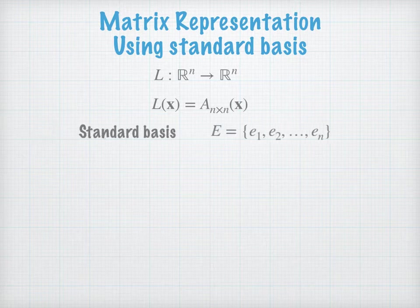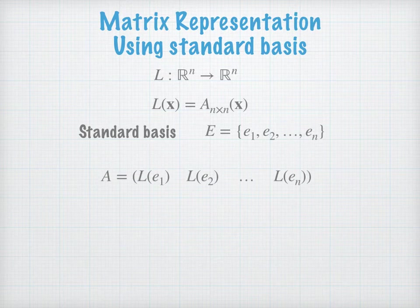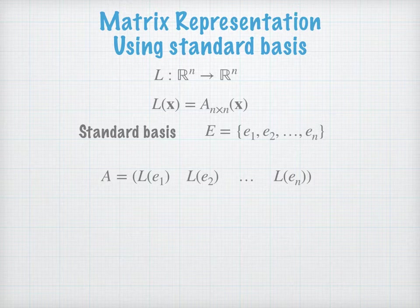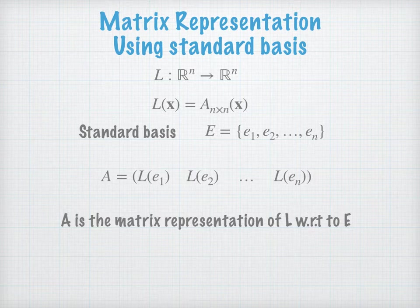In order to find A, we need to use a standard basis. The standard basis consists of all unit vectors e1, e2 to en. A is constructed by taking L(e1) as the first column of A, L(e2) as the second column of A, and so on. So once you find A, it is the matrix representation of the linear transformation L with respect to e, the standard basis.